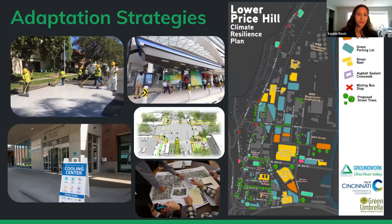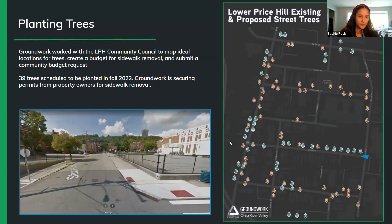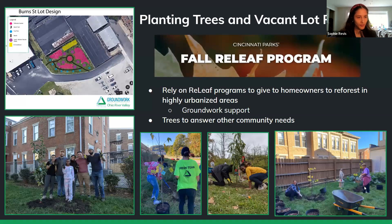The Lower Price Hill climate resilience plan shows proposed trees, different green roofs, green spaces, and things like that the community wants to see. In Lower Price Hill we are working to plant 39 street trees, scheduled for fall 2022. The community identified these on the map, we geolocated them, and we are working with urban forestry to get them planted. Street trees are just one part of the tree planting solution — we've also been planting on private property and working to renew vacant lots to make them more beautiful and valuable to the community.